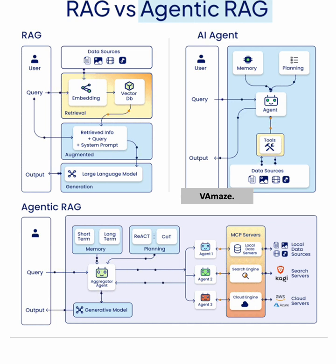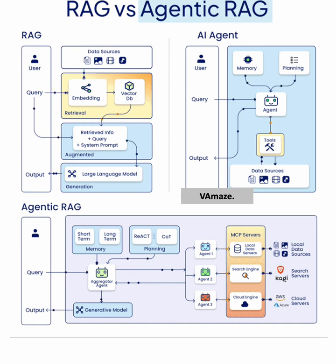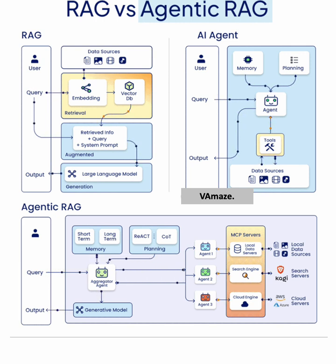On the left, we have the RAG model. It begins with a user who provides a query. This query is processed by a system that retrieves relevant data sources through embedding and vector databases. The retrieved information is then combined with the user query and passed through a large language model to generate the final output. The strength of RAG lies in its ability to use relevant external data to augment the model's responses, enhancing the quality and context of the generated content.